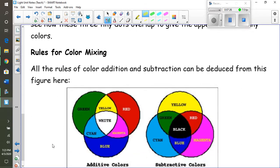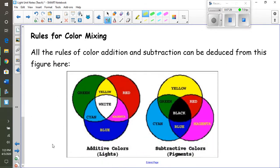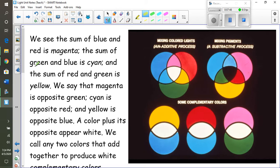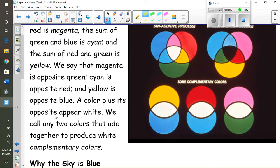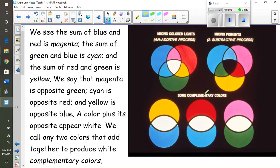So this graph right here sums up the rules for color mixing. We have the additive rules - this is if you're mixing like different flashlights. The subtractive rules - like you're mixing pigments, for paints and printer ink and things like that. So we see the sum of blue and red is magenta, the sum of green and blue is cyan, the sum of red and green is yellow. We see that magenta is the opposite of green and yellow is the opposite of blue. So this comes up with something we call complementary colors.